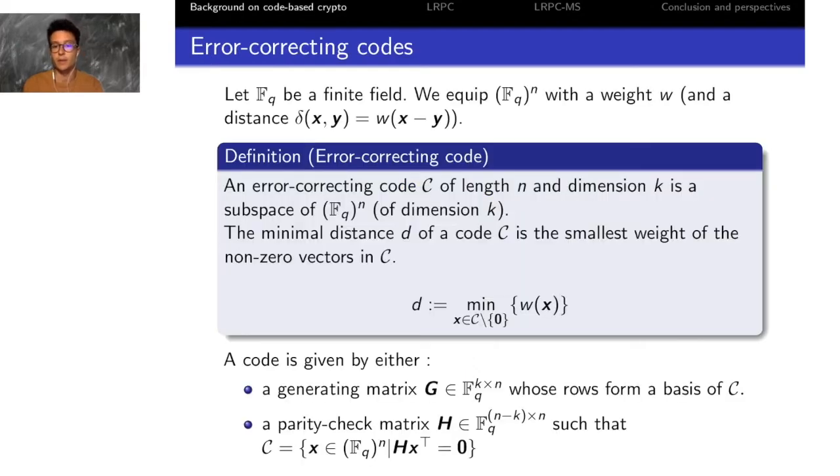In coding theory, we equip the set of words with n coordinates in a finite field FQ with a weight, and we define an error correcting code as a subspace of dimension K of FQ with n coordinates. The minimal distance of the code is defined as the smallest weight of the non-zero vectors of the code.